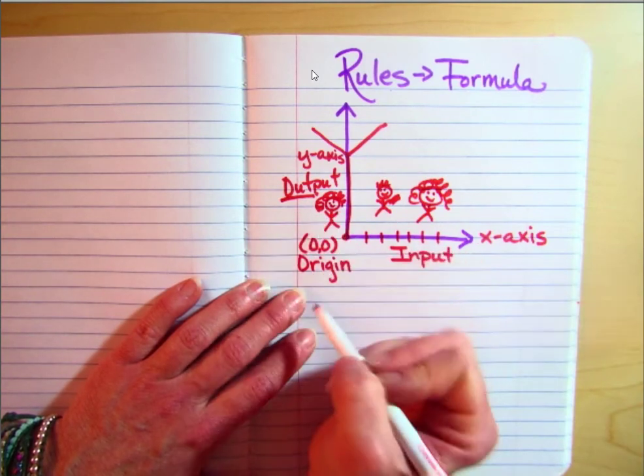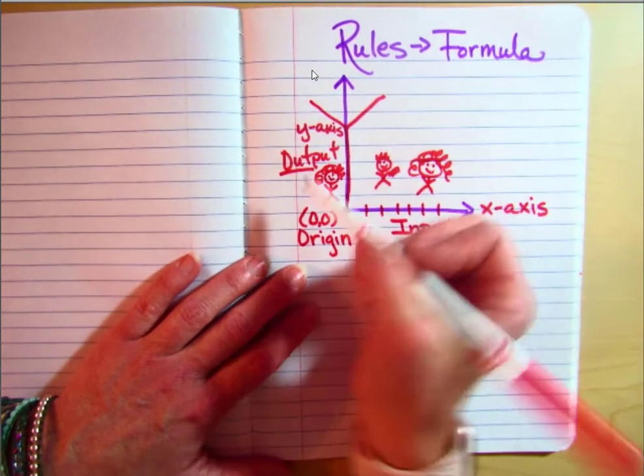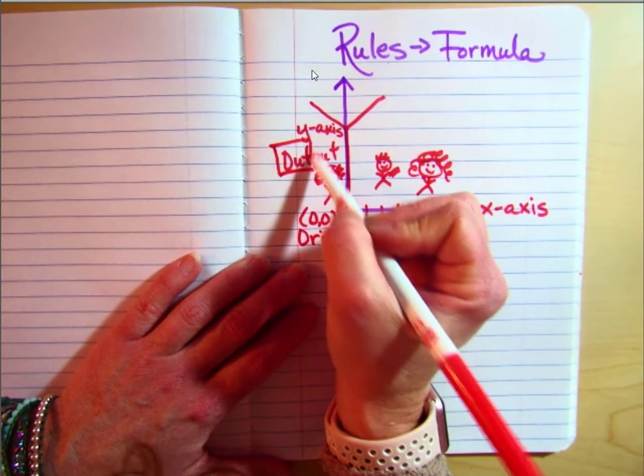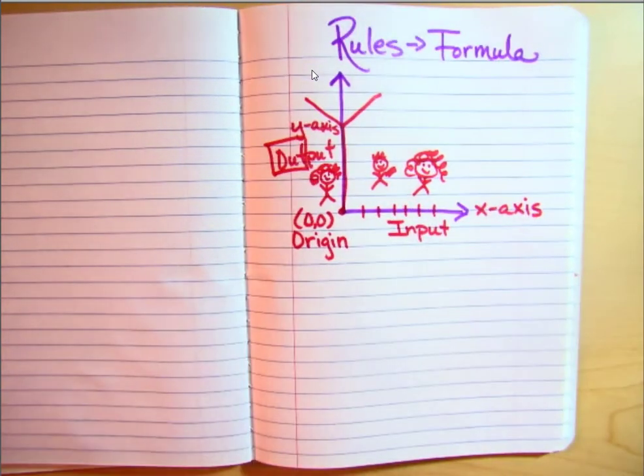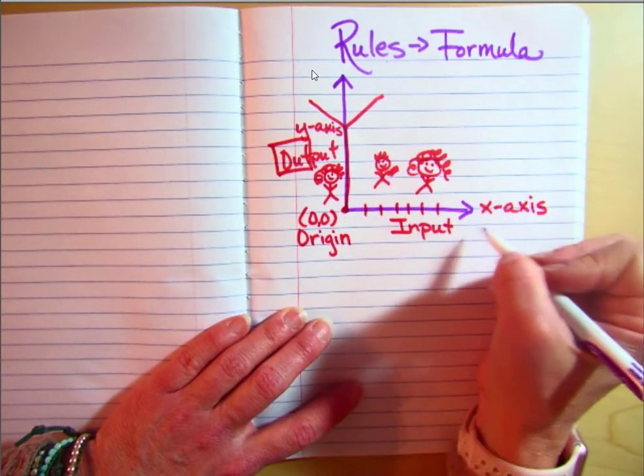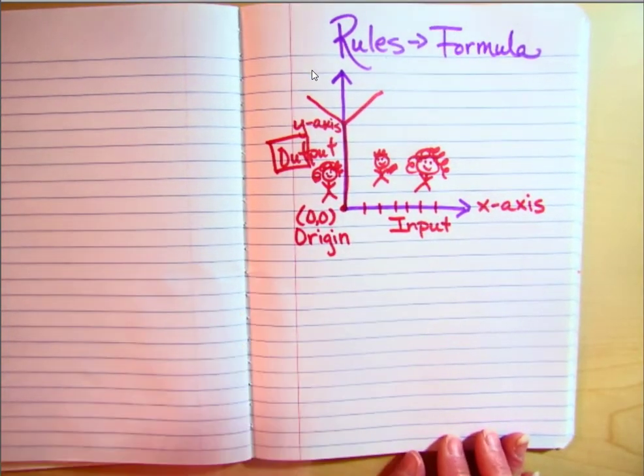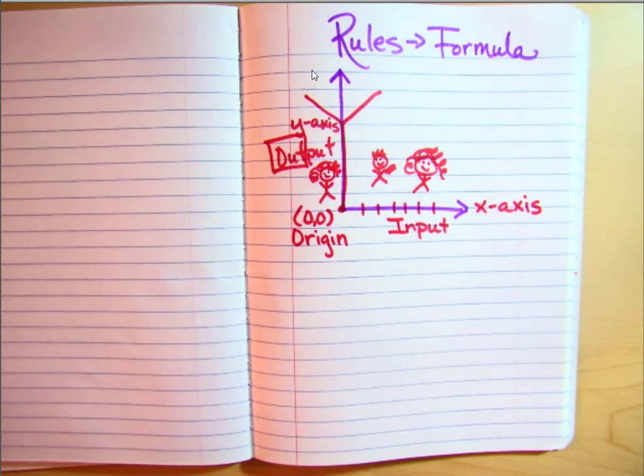That's just that little trick to help you remember your output's on the outside. Your input is this x-axis, and this is your horizontal axis and this is your vertical axis. But we'll go over that more in the future.